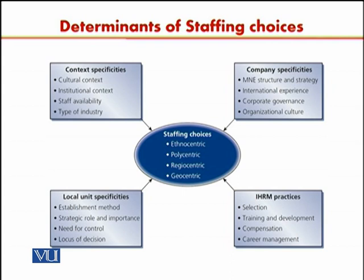So different types of factors coming from various external environment factors affect your staffing choices. This model classifies these different factors into four categories and tries to explain what different factors would be affecting your staffing choices in international operations.